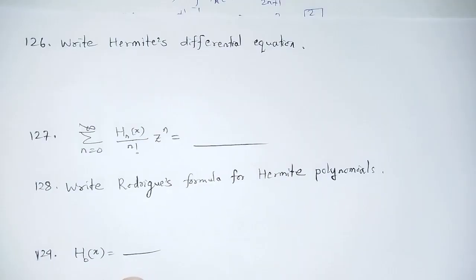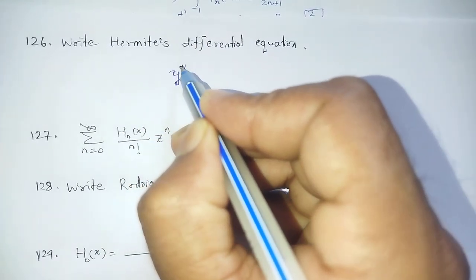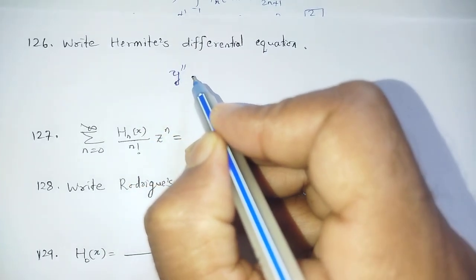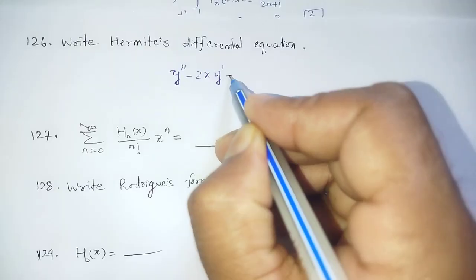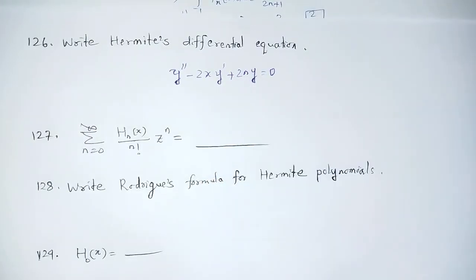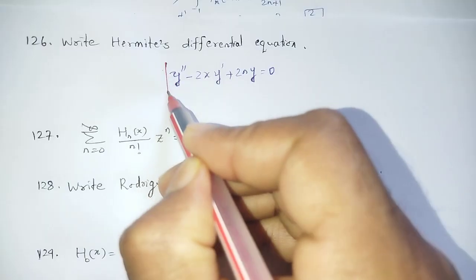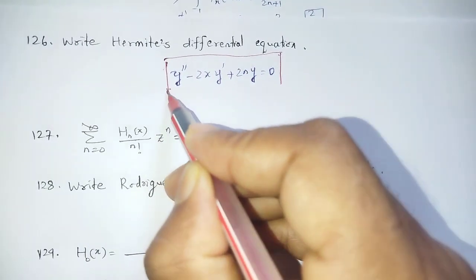Next, let us discuss the Hermite Differential Equation and Hermite Polynomial related questions. Write the Hermite Differential Equation: y'' - 2x·y' + 2n·y = 0.